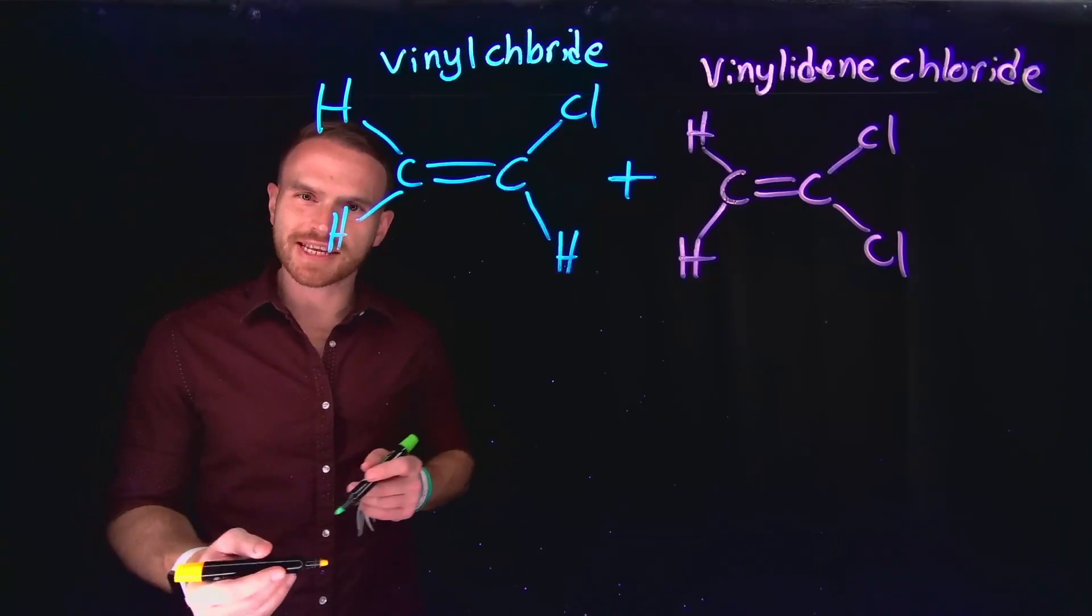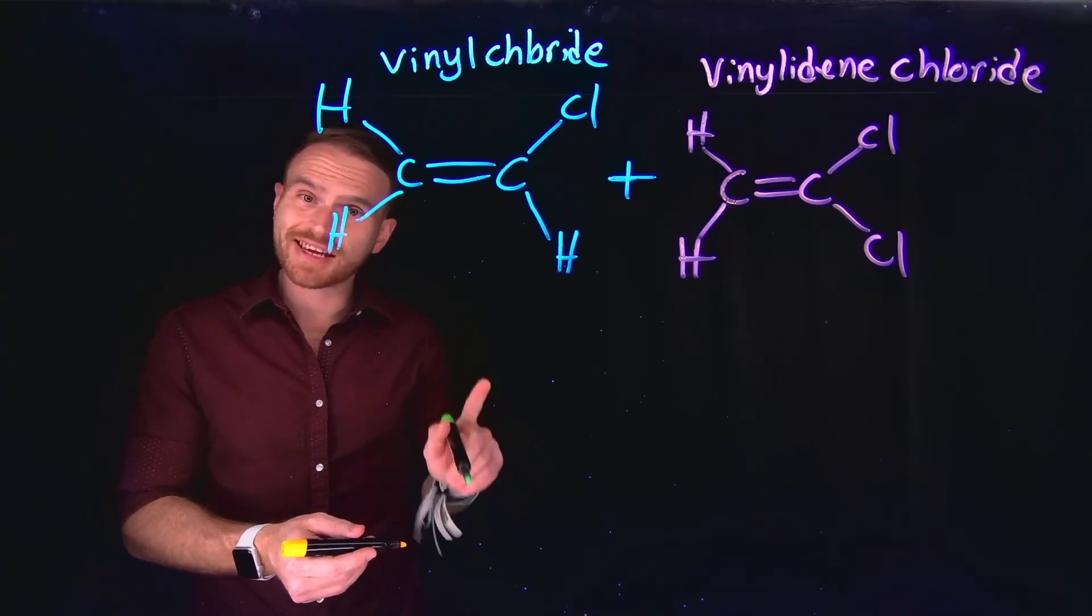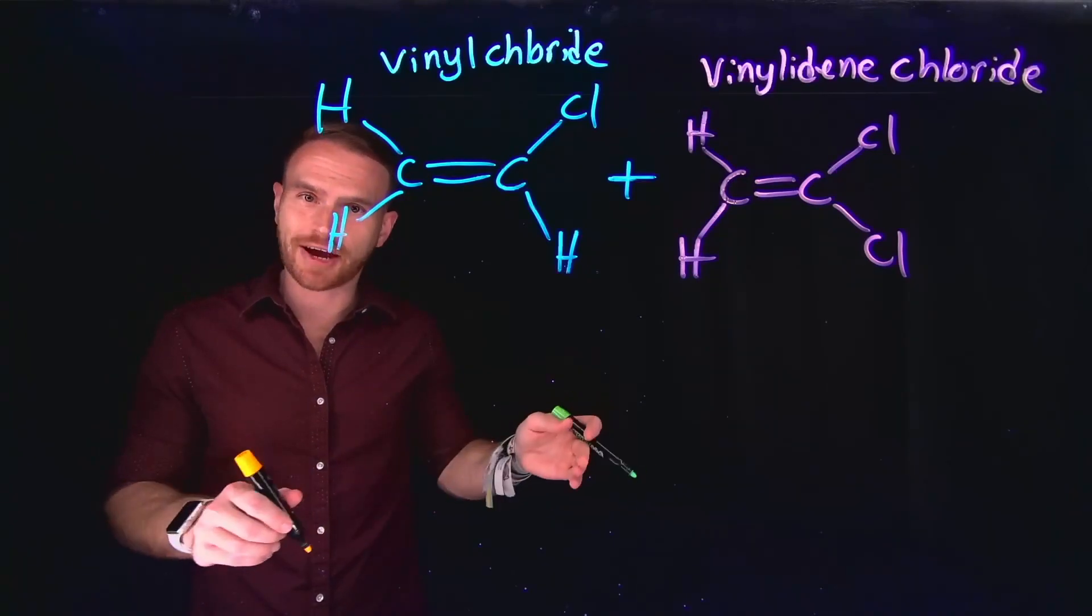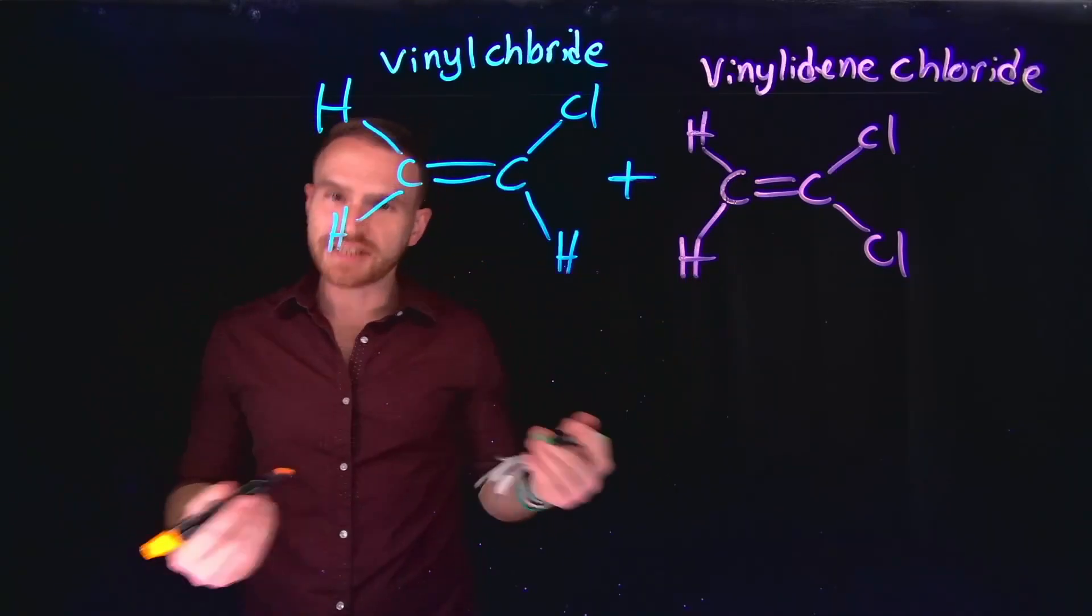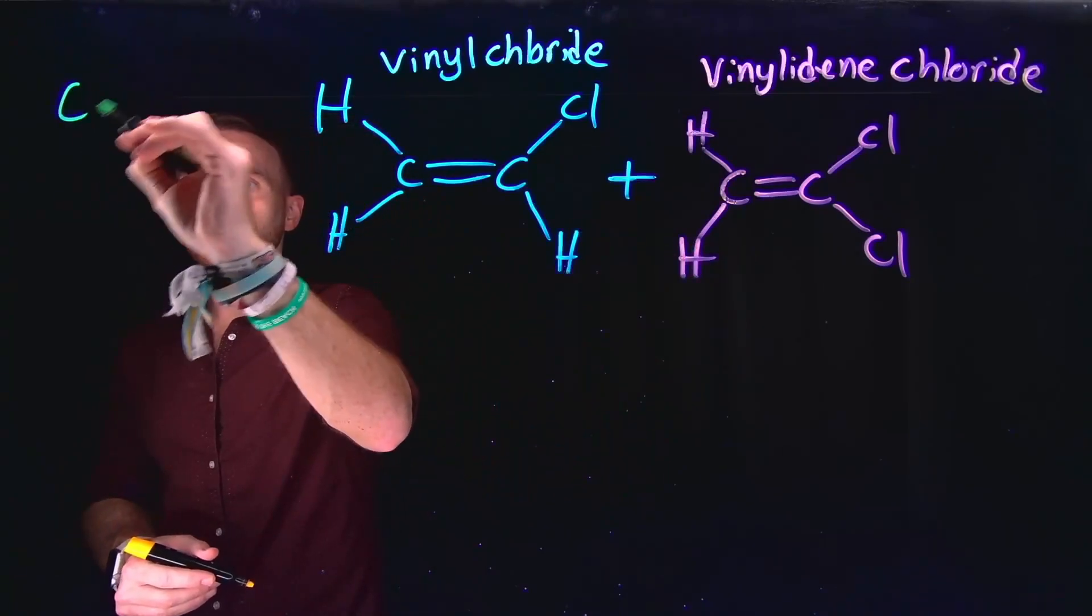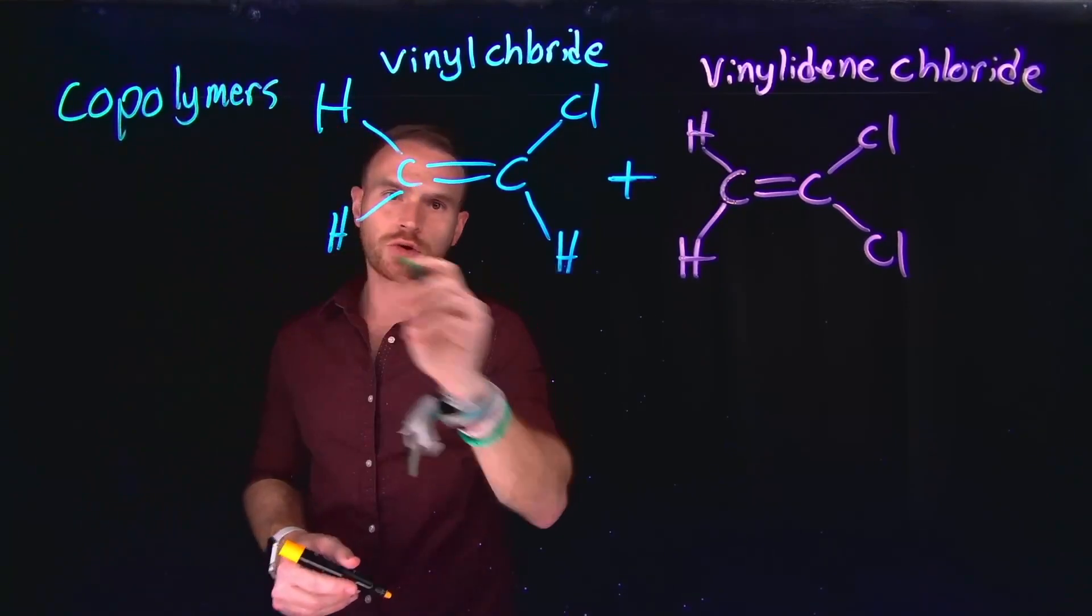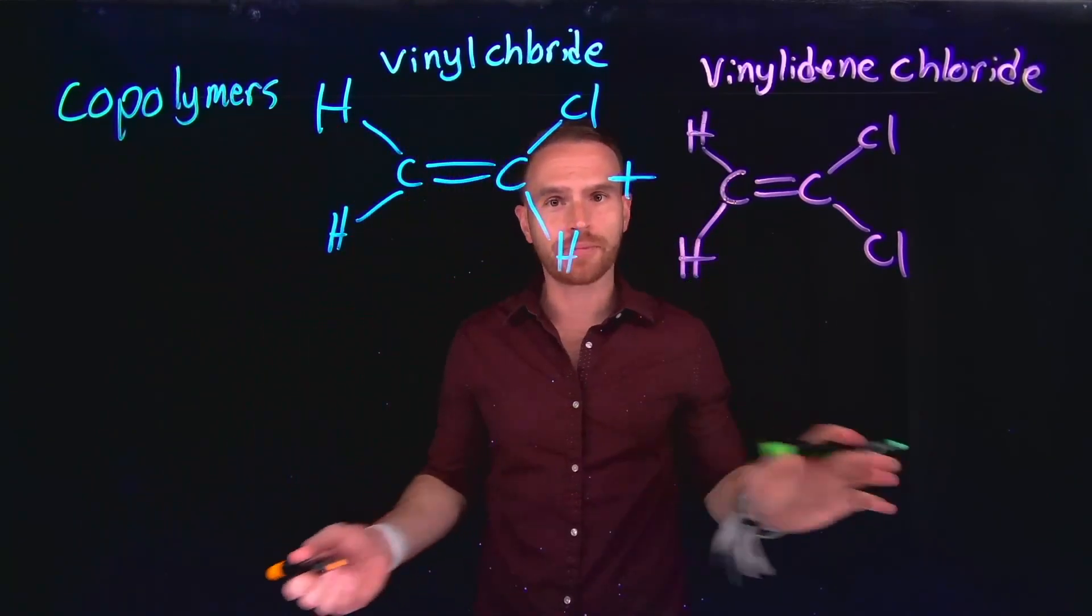Thus far, we've largely looked at examples of what are called homopolymers, where the polymer is made up of a single type of monomer to generate the entire polymer. In contrast, polymers that are made up of different types of building blocks known as monomers are called copolymers. So copolymers are anytime you have two or more monomers that make up the polymeric substance.